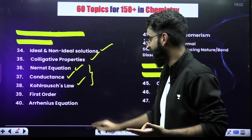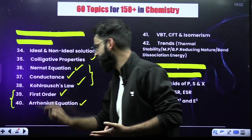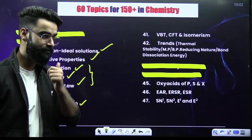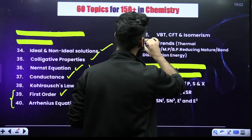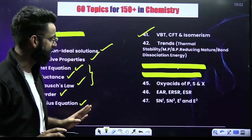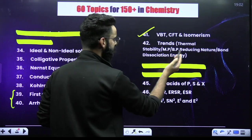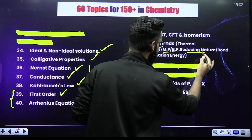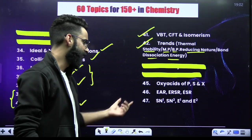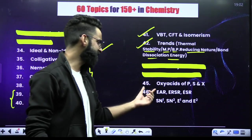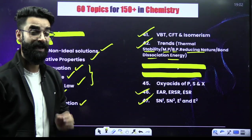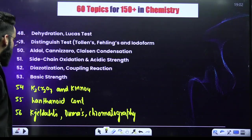When it comes to Kinetics, two topics are frequently asked: first order reactions and the Arrhenius equation. For Coordination Chemistry: valence bond theory, crystal field theory, and isomerism. For P-Block: different trends based on thermal stability, melting and boiling point, reducing nature, and bond dissociation energy. In the reaction portion: EAR, ERSR, ESR, and similarly SN1, SN2, E1, E2 — these are the short reactions asked every year from the organic part in NEET.